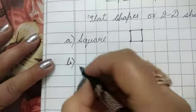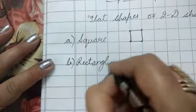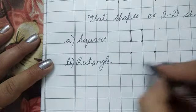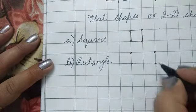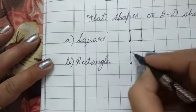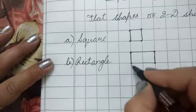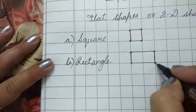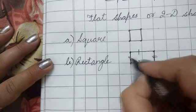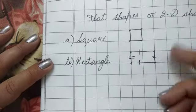Second one is rectangle. It also has four corners. Opposite sides are equal, and it also has four sides.